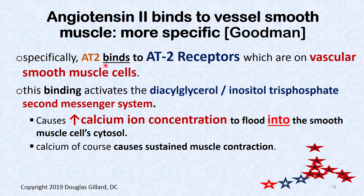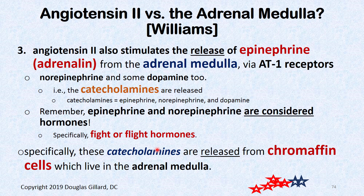More specifically, angiotensin II binds to AT1 receptors on smooth muscle. This binding activates the diacylglycerol and IP3 second messenger system, which causes calcium ions to dump into the cytosol of the smooth muscle, producing a more sustained type of contraction.